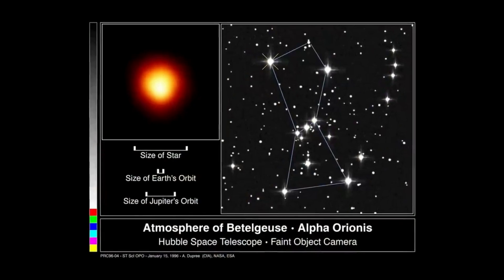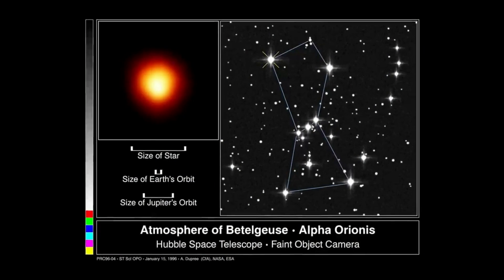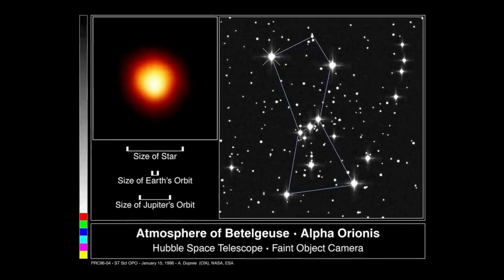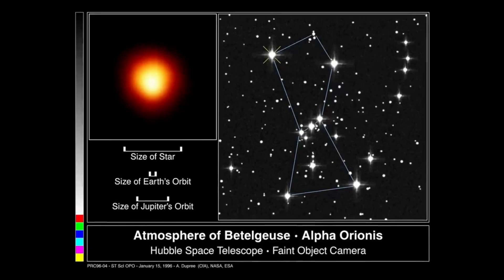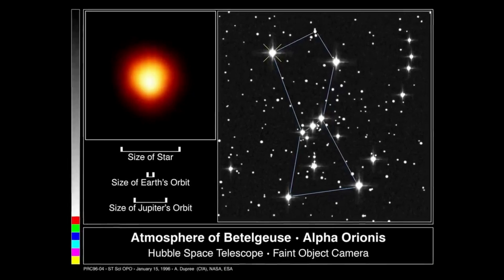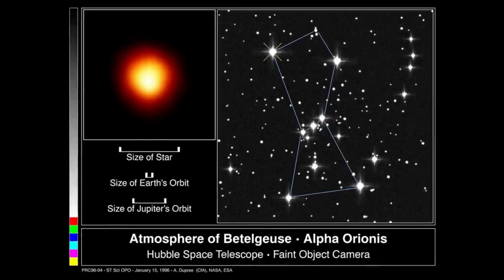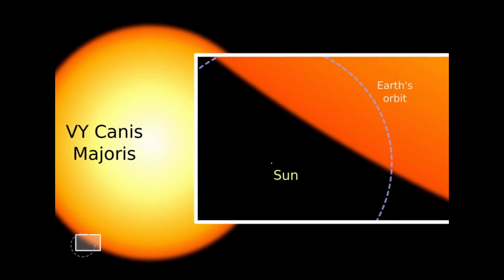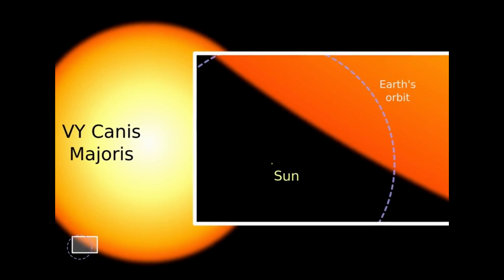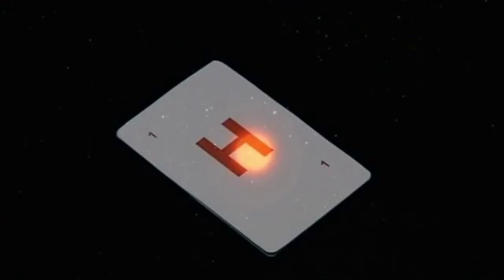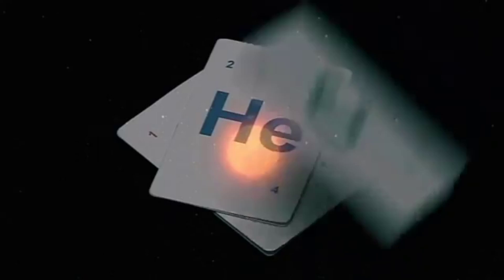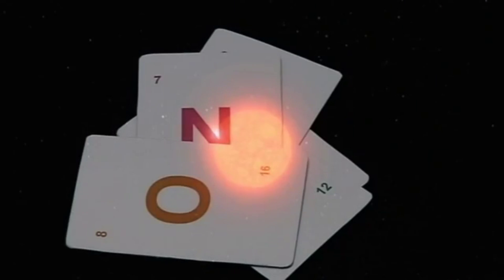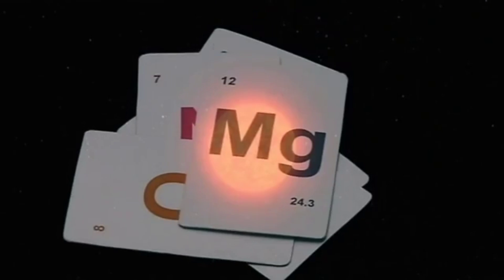So when this happens to a massive star, it expands into a supergiant. These can be anywhere from 30 to in excess of 1000 times the radius of the Sun, and tend to have a very short lifespan — between a few hundred thousand and 30 million years, roughly. During this time, they will burn heavier and heavier elements within their cores, until they collapse into their next phase: a supernova explosion.